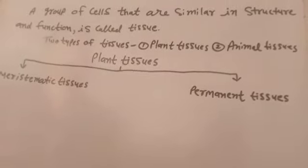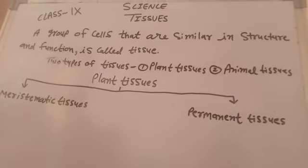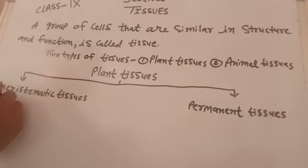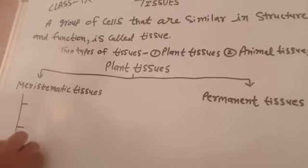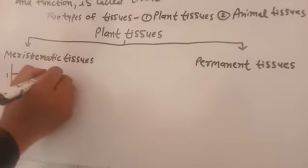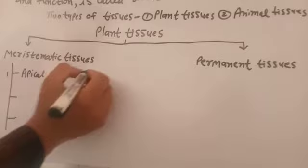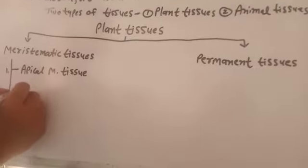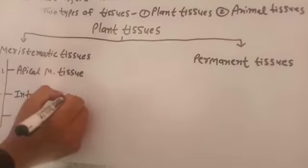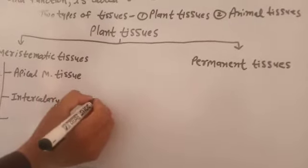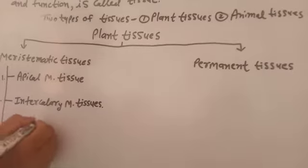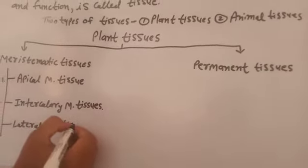Meristematic tissues are dividing tissues which are present in the growing region of plants. Meristematic tissues are further divided into three types: first, apical meristematic tissues; second, intercalary meristematic tissues; and third, lateral meristematic tissues.